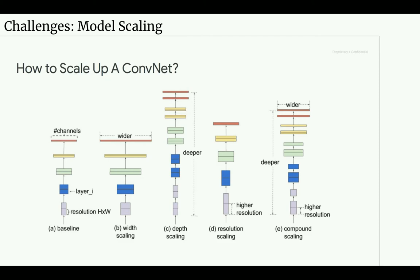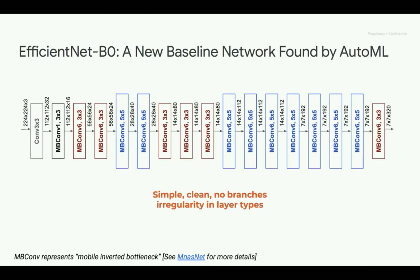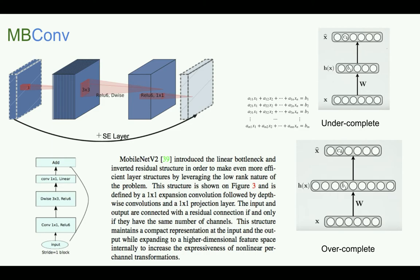Once we have a good baseline, we can use scaling techniques to create a family of models. The EfficientNet paper finds a good baseline — EfficientNet-B0 — using AutoML. EfficientNet-B0 contains only depthwise separable convolutions with no 3×3 convolutions, making it very computationally efficient. It only contains MobileNet-V2 blocks, called MBConvs. MBConvs efficiently create features using a bottleneck structure with a residual connection in each block, but instead of sending features to a lower-dimensional space, they send them to a higher-dimensional space.